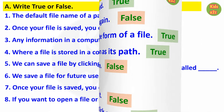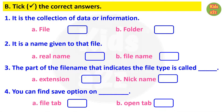For question B, kids need to choose the correct answer from the given options. Question 1: it is the collection of data or information — answer is option A, file. Question 2: it is a name given to that file — answer is option B, file name.